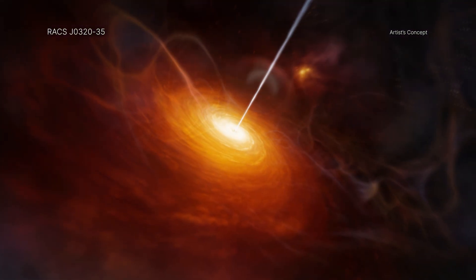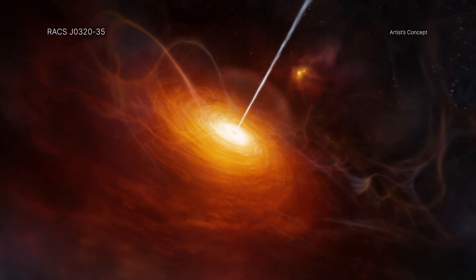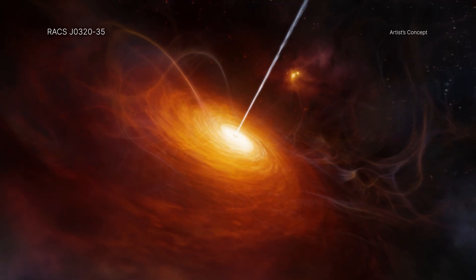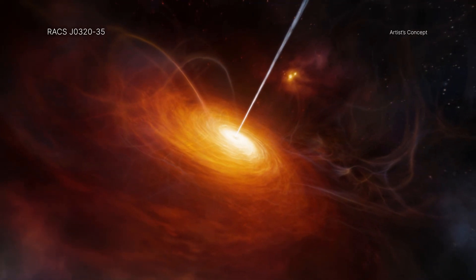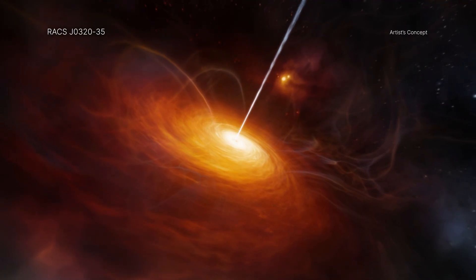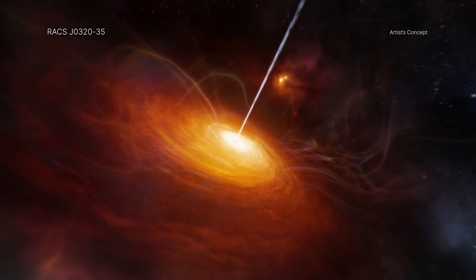When matter is pulled toward a black hole, it is heated and produces x-rays and optical light. This radiation creates pressure by pushing out on the matter, which counteracts the force of gravity pulling the matter in toward the black hole. When the amount of matter becomes large enough, the pressure from the radiation overpowers the force of gravity.